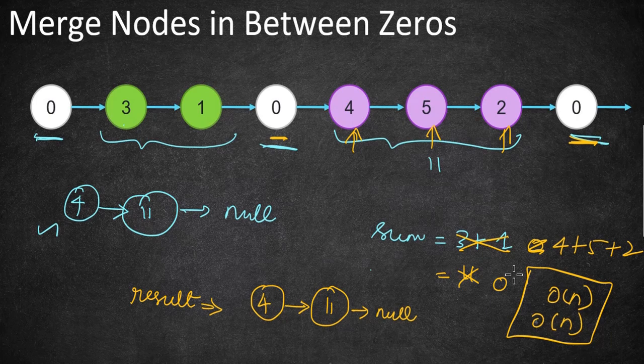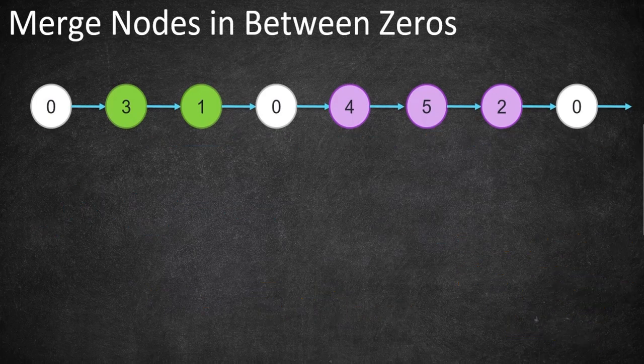There is another solution where we can solve it in O(n) time and constant space without using extra space. As I always say, if it is a linked list problem then using pointers is the best way to solve it. We are going to use two pointers — one is current and the other is temp — and we will construct the result directly in the existing linked list memory.